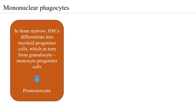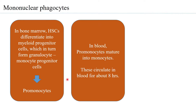Mononuclear phagocytes develop within the bone marrow. The hematopoietic stem cells differentiate into myeloid progenitor cells, which in turn form granulocyte-monocyte progenitor cells, and then these differentiate into what is called pro-monocytes. In blood, the pro-monocytes mature into monocytes.